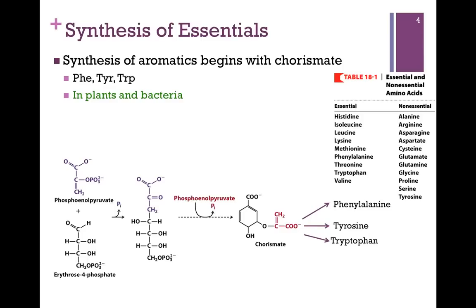Plants and bacteria are able to synthesize aromatics. They start with phosphoenolpyruvate and erythrose-4-phosphate, combine with another molecule of phosphoenolpyruvate, and form a long hydrocarbon chain that folds up to form the ring structure. The intermediate is chorismate. From this intermediate, bacteria and plants can make each of the three aromatics: phenylalanine, tyrosine, and tryptophan. The key point is that the precursor for all three aromatics is chorismate, and this occurs only in plants and bacteria.